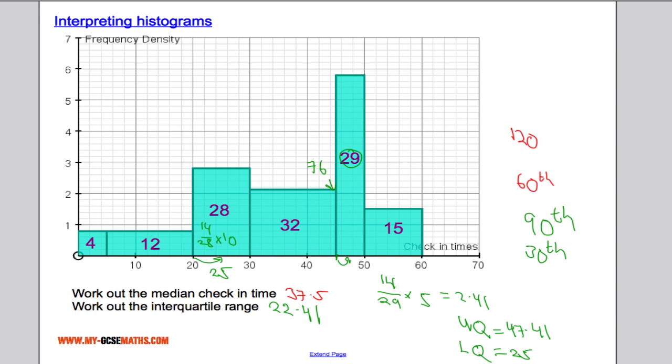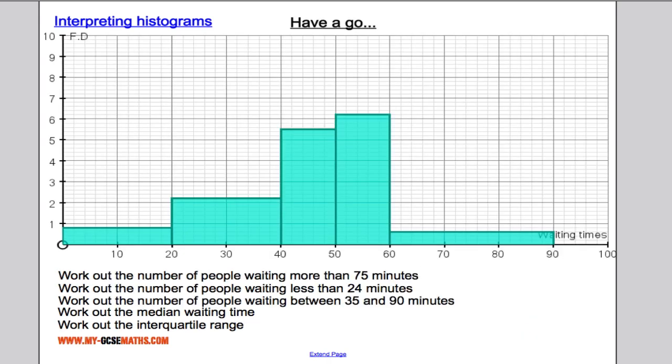Time for you to have a go. Here are some questions, different histogram, and if you've printed off the notes, you can read it off directly from the histogram. Best of luck. Okay, hopefully you've tried that question. I'm going to bring up the solutions now, and you can mark off your work, see how you did. So there we have it. That is how we interpret a histogram for GCSE. Hopefully you enjoyed the video. Best of luck with the revision, and I'll talk to you again sometime. Thank you.